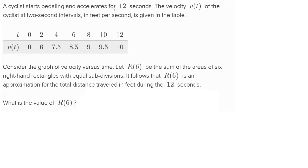A cyclist starts pedaling and accelerates for 12 seconds. The velocity v(t) of the cyclist at two-second intervals in feet per second is given by a table. They tell us at different times: after 4 seconds velocity is 7.5 feet per second, after 8 seconds velocity is 9 feet per second. Consider the graph of velocity versus time. Let R(6) be the sum of the areas of six right-hand rectangles with equal subdivisions. R(6) is an approximation for the total distance traveled in feet during the 12 seconds.